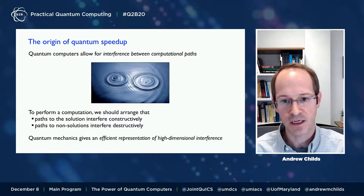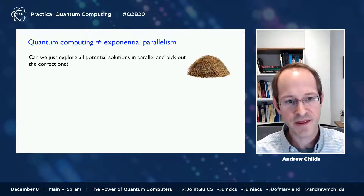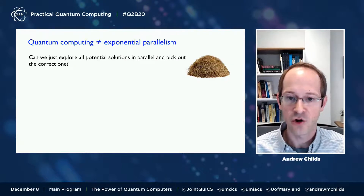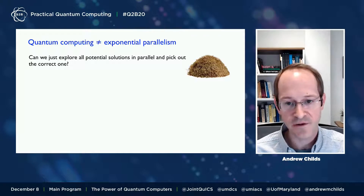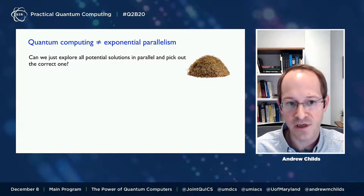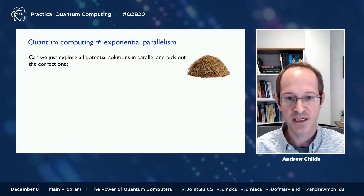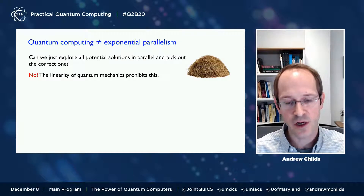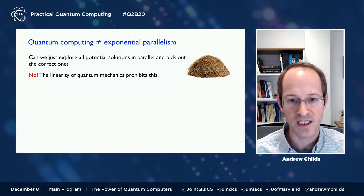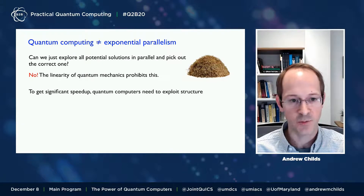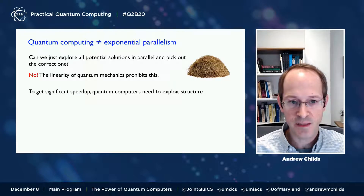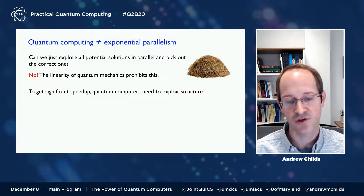But when can this power give us a fast solution? You might think that by having a superposition of all possible solutions, we could arrange the interference to pick out just the correct one quickly out of exponentially many possibilities — just pluck the needle out of the haystack. But it turns out that this is not the case. The linearity of quantum mechanics prohibits this, and in a certain model you can actually prove it's not possible for a quantum computer to very efficiently solve this kind of problem. Quantum computing is not the same thing as just having exponential parallelism.